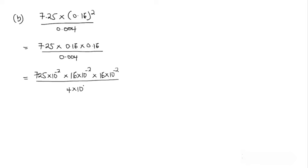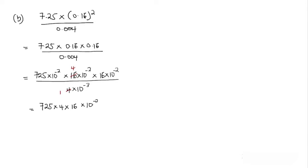Now we simplify to make multiplication easier. Four goes into itself once, and four goes into sixteen four times. So we have seven hundred twenty-five multiplied by four, multiplied by sixteen, then ten to the power: negative two plus negative two plus negative two, which gives negative six, all over one multiplied by ten to the power negative three.